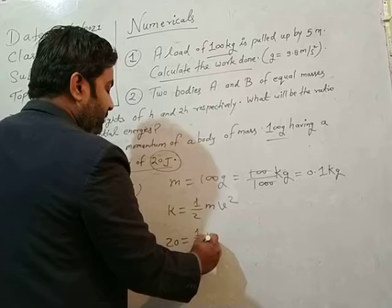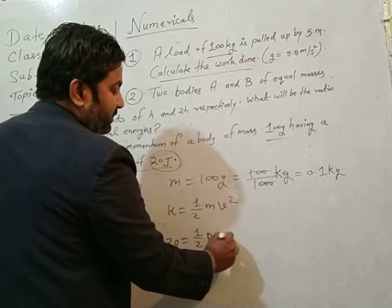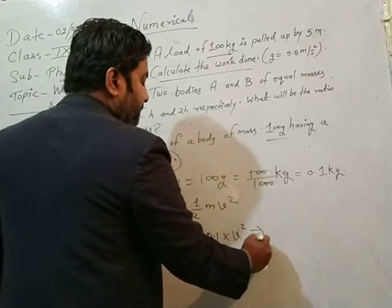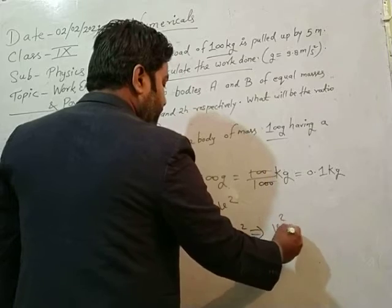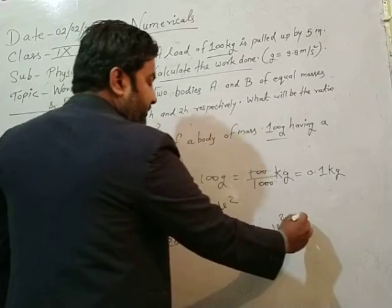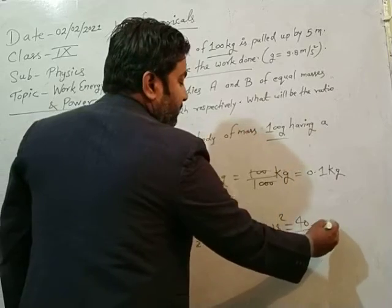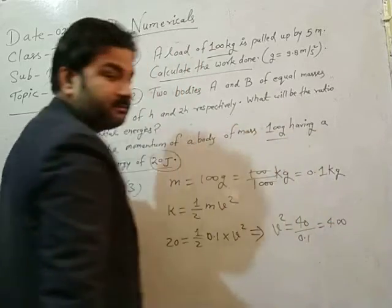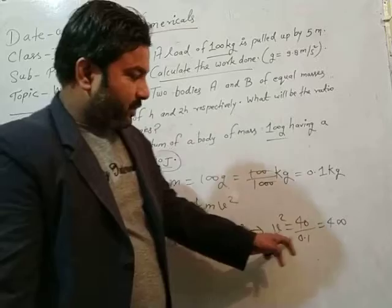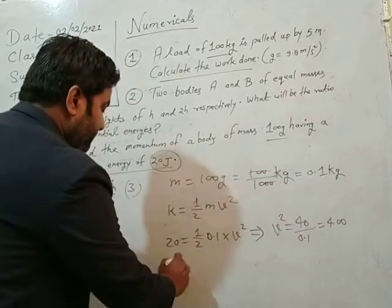So 20 is equal to one-half into m, that is 0.1, into v square. So v square is equal to 40 upon 0.1, is equal to 400. This is the velocity square value, 400.